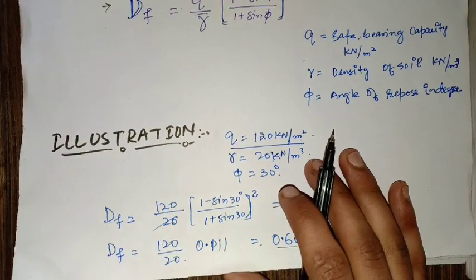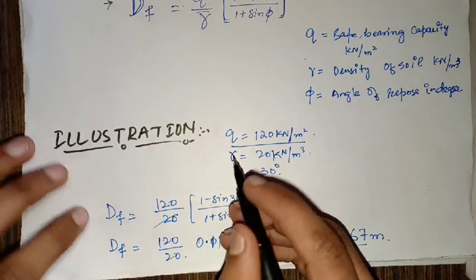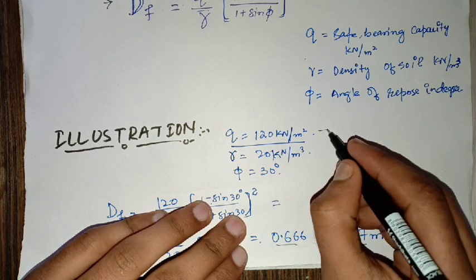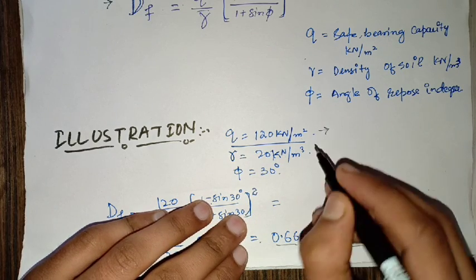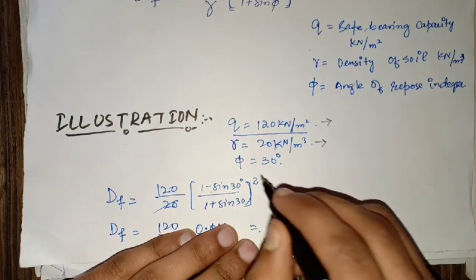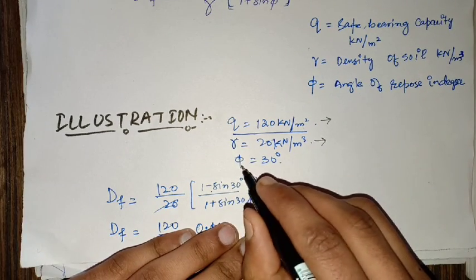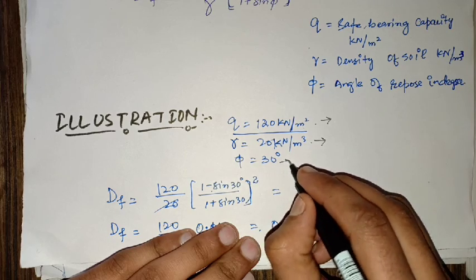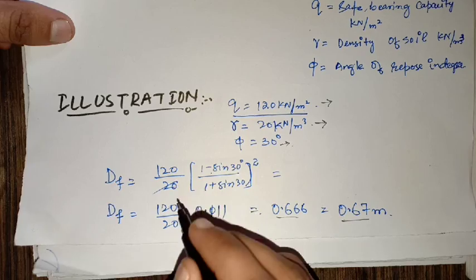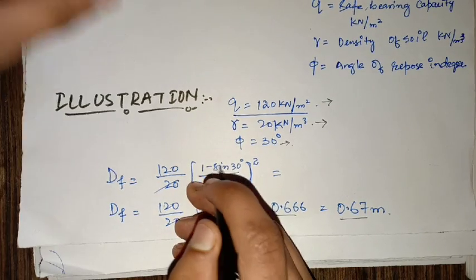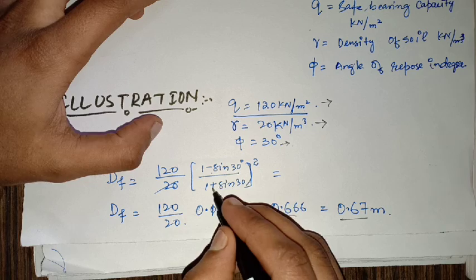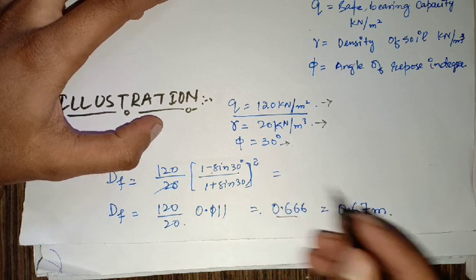I will give you an example for the calculation of depth of foundation. If the safe bearing capacity of the soil is 120 kN/m², the density of the soil is 20 kN/m³, and the angle of repose φ is 30 degrees, then the depth of foundation is calculated as: 120 / 20 × ((1 − sin 30°) / (1 + sin 30°))².